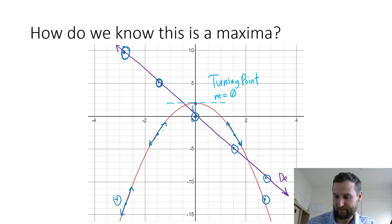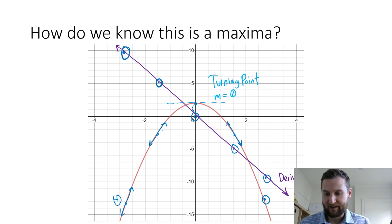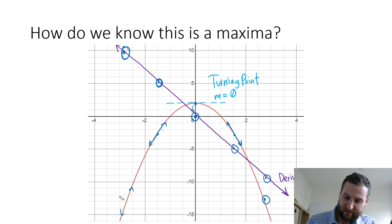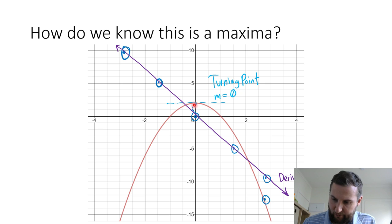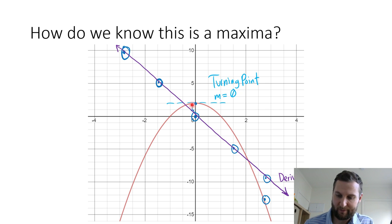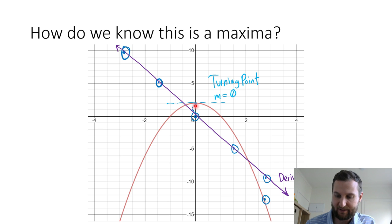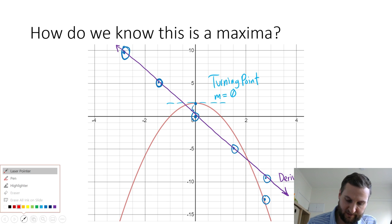This looks pretty good — this is now my derivative, my gradient function. The slope of the parabola gives me a derivative, and the slope is going to tell me all about this function. So around my turning point, I want to determine if this is a maximum or a minimum. If it's a maximum, then just to the left is going to have a decreasing function output, and just to the right is also going to be less.